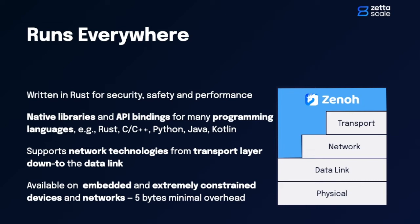Zeno is available on extremely embedded devices and has a wire overhead of only 5 bytes. This is the lowest wire overhead available on the market.